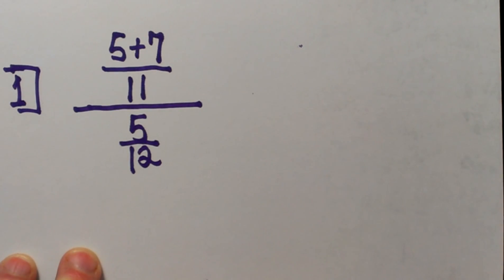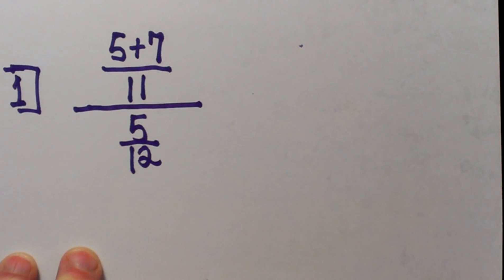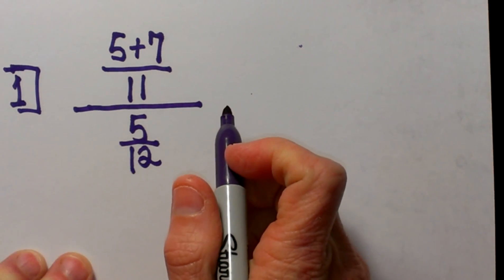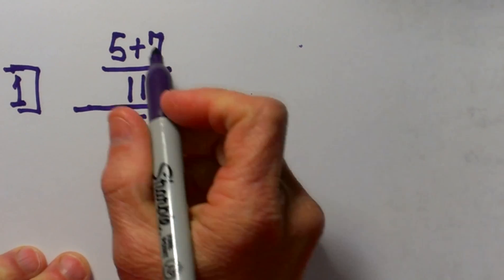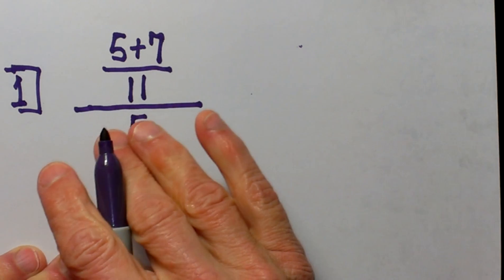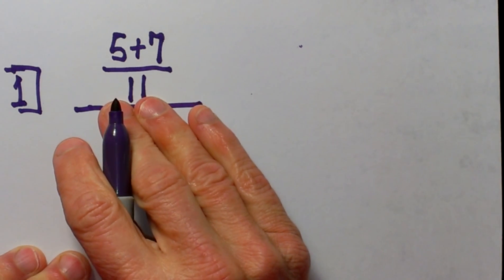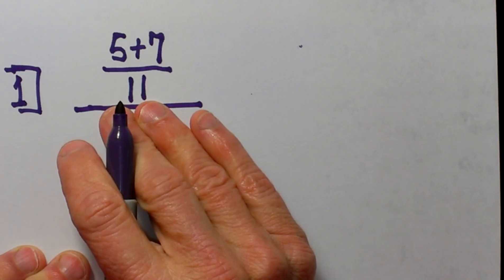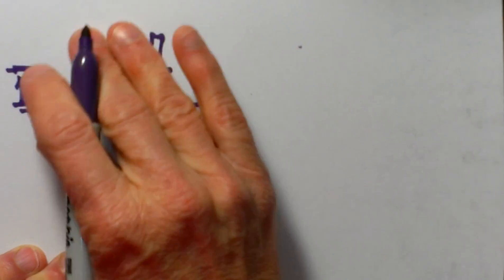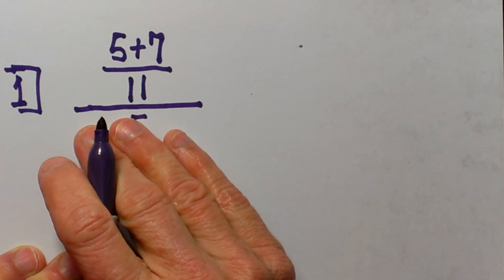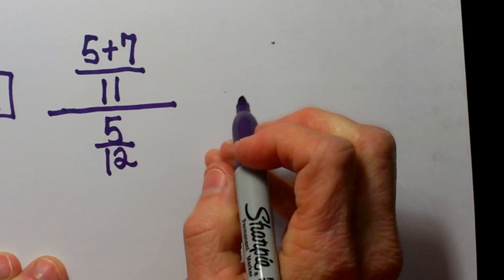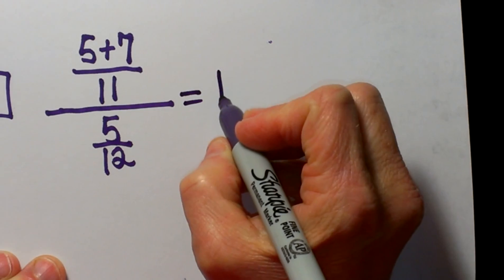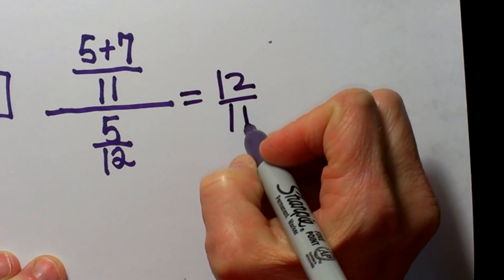We are going to start and look at three different problems. We are going to start without variables and then throw some variables in there to make the double deckers a little more difficult. The first thing you want to do is isolate each part of the fraction. So I am going to look at the top of the fraction and see if I can simplify this part at all — and I can. I am going to make that into 12 over 11.